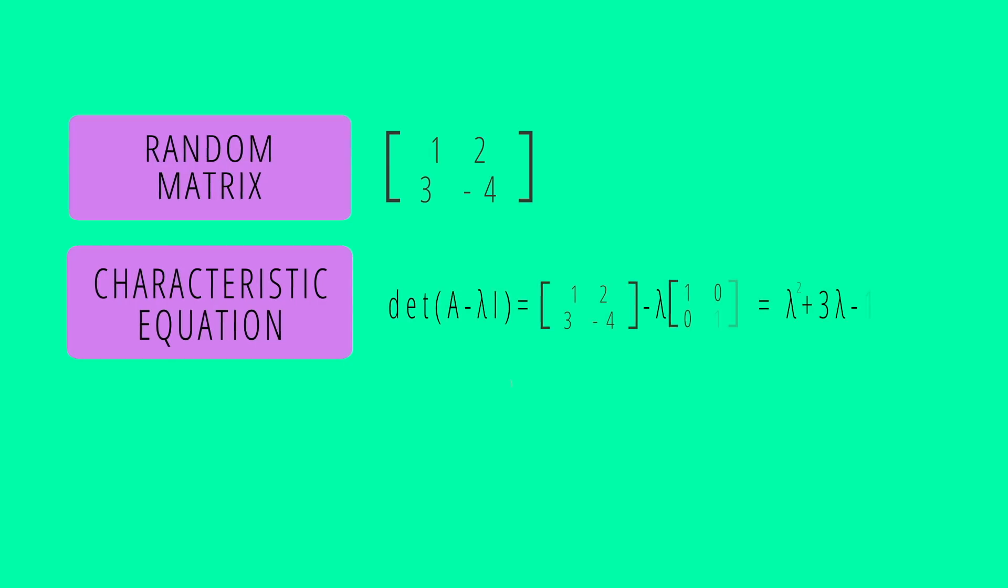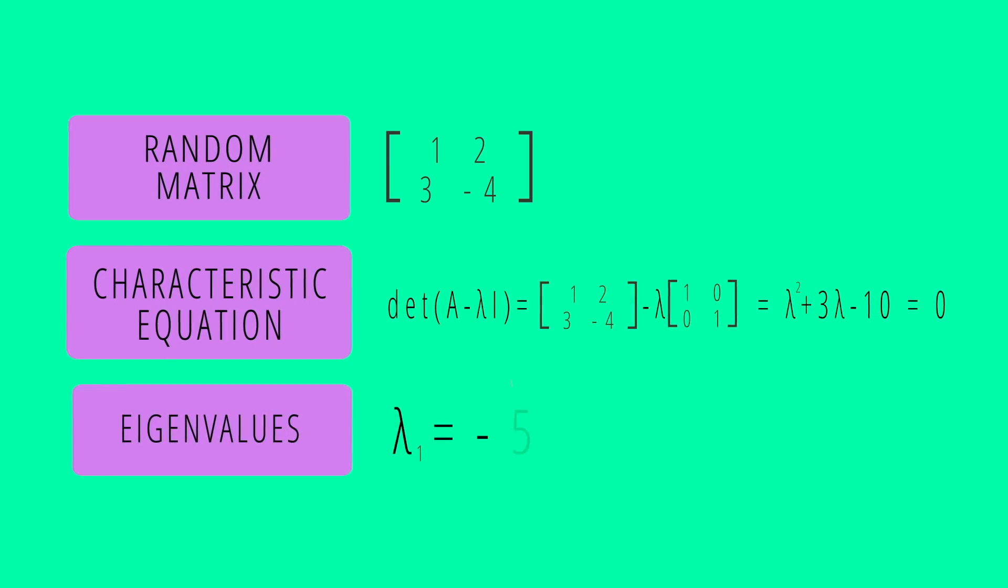You can characterize a matrix by its eigenvalues, a series of numbers that can be calculated by multiplying components of the matrix together in a certain way.